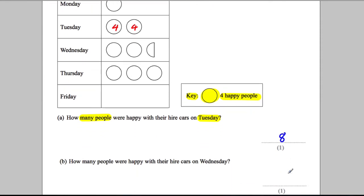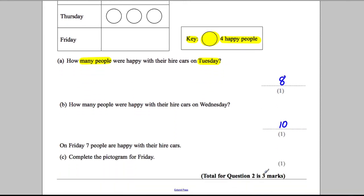Next part, part B. How many people were happy on Wednesday? Well, we've got four people for a whole circle, four people for a whole circle, and then a semicircle or half a circle here must be worth two. Four add four add two is equal to ten people were happy on Wednesday.